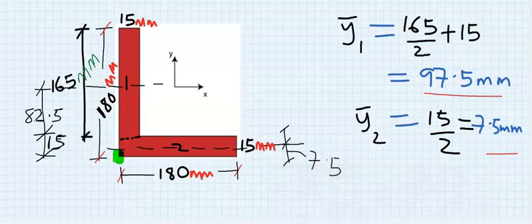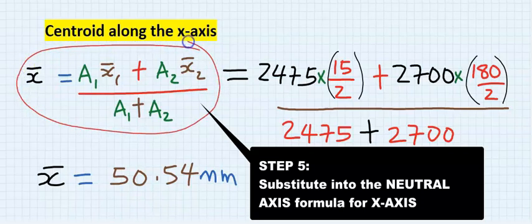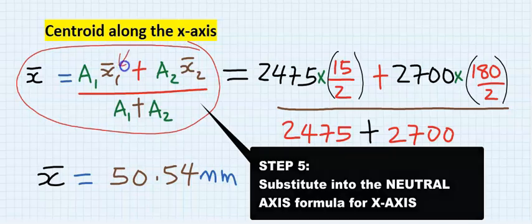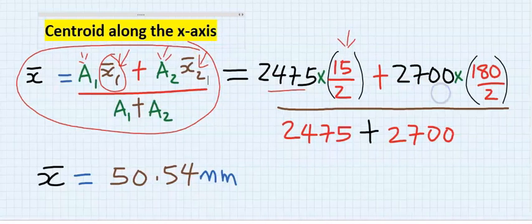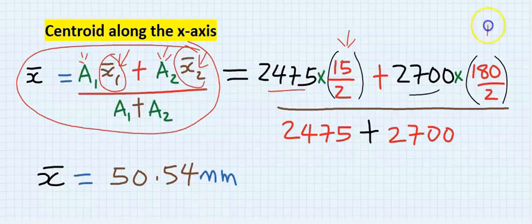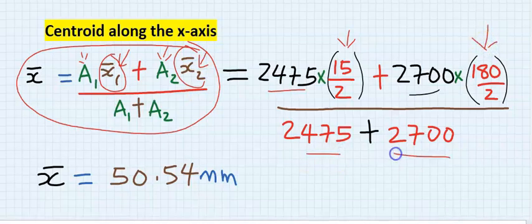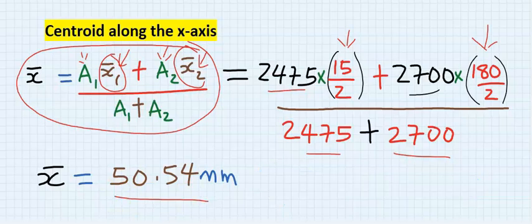The next step is to substitute into the required formulas. For the centroid along the X axis, this is the formula and you can see that this is having X1 and X2. Hence, for my A1 is this and for the centroid of the first rectangle is this and for the A2 is this while this is the summation of the area and if you solve carefully, you're going to get 50.54 millimeters.